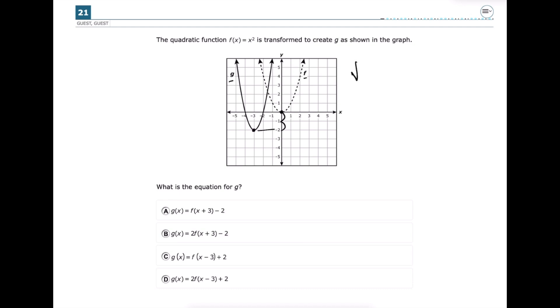So since it went down 2, that means that we're going to have a minus 2 at the end of our equation. And so letter a and letter b both have that minus 2 at the end.